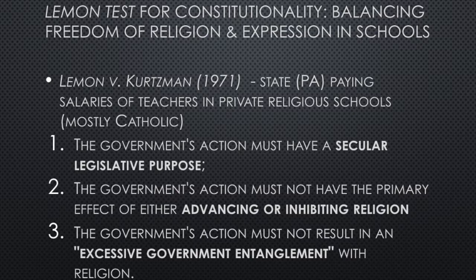These three prongs state that: one, the government's action must have a secular legislative purpose; two, the government's action must not have the primary effect of either advancing or inhibiting religion; and three, the government's action must not result in an excessive government entanglement with religion. If any of these three prongs are violated, the government's action is deemed unconstitutional under the Establishment Clause.